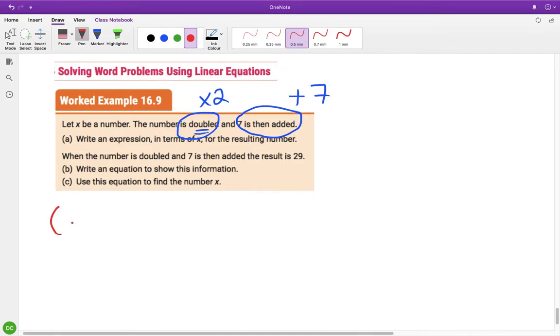And for prior to day here, they want us to write an expression. So they said x is a number, and they want us to, actually, just let me do that in a different colour. So x is my number that I'm going to start with. Now, the number is doubled, so I multiply that number by two, and seven is then added, plus seven.